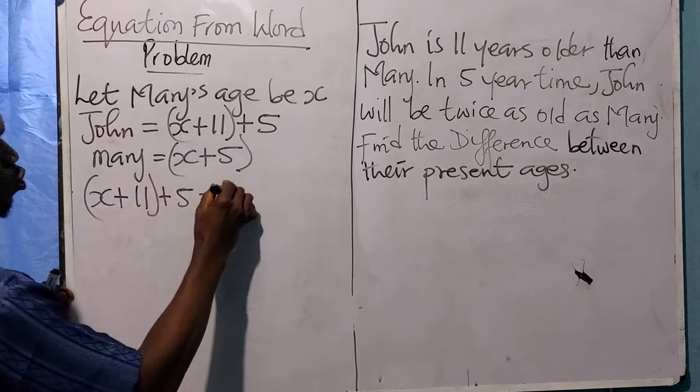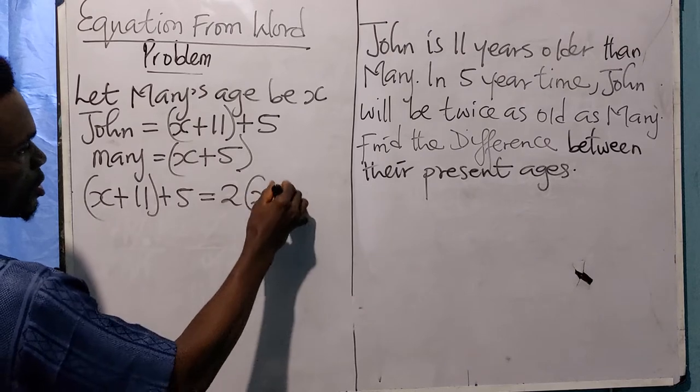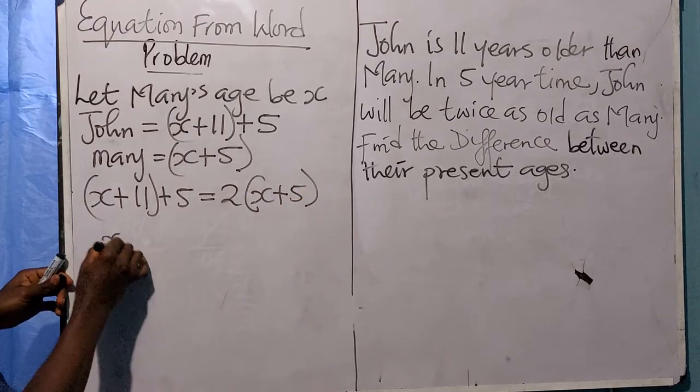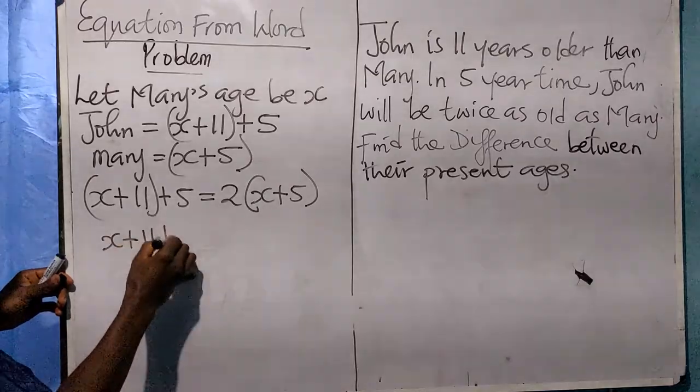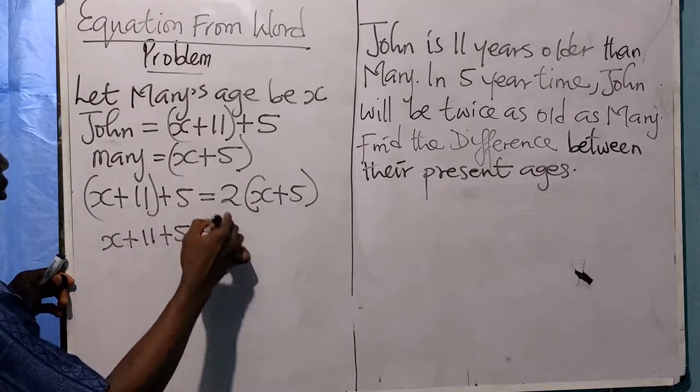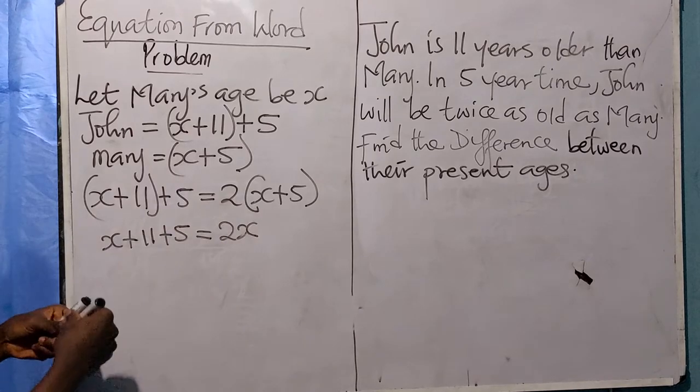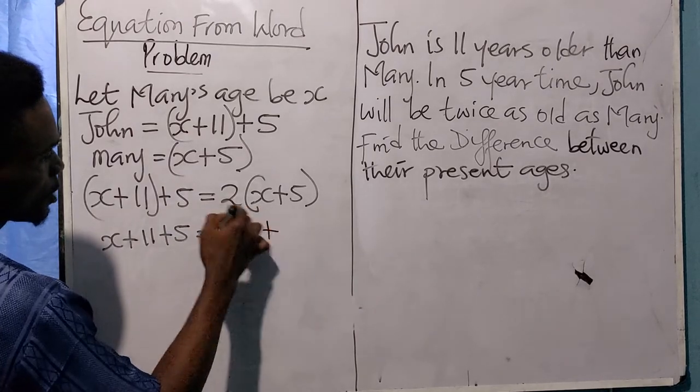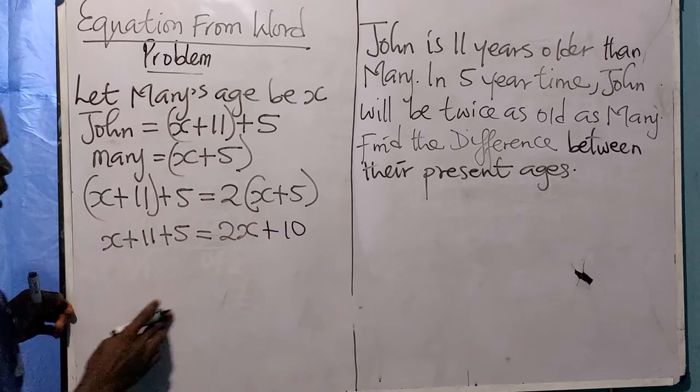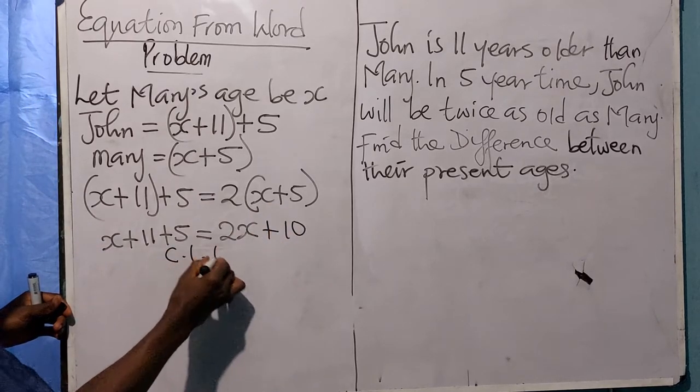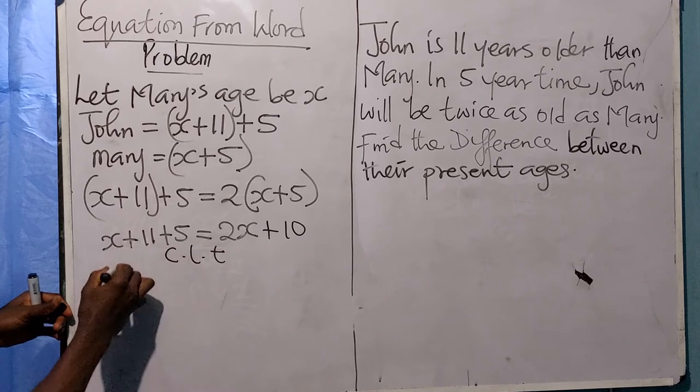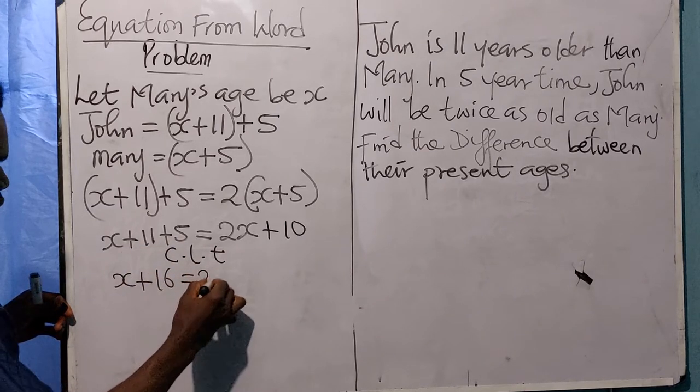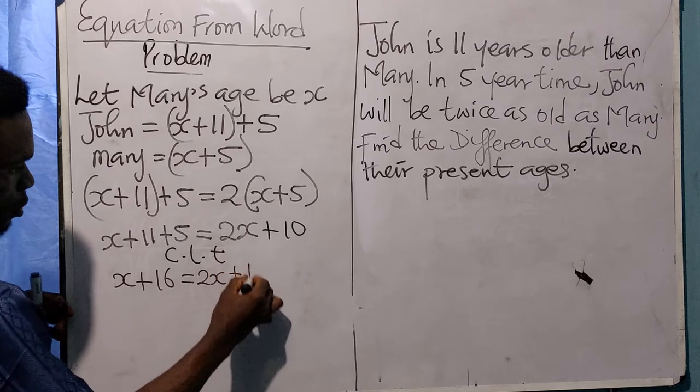Mary's age will be x plus 5, so this is x plus 11 plus 5 equals 2 times (x plus 5). Two times x is 2x, and 2 times 5 is 10. So x plus 16 equals 2x plus 10.